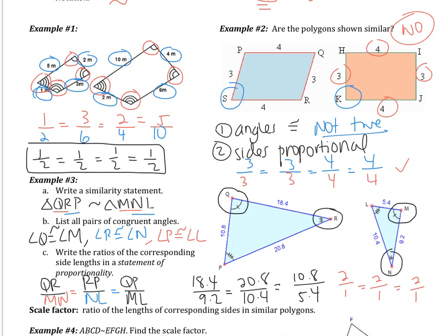So these triangles are similar for two reasons. One, all of their angles are congruent. And two, all of the sides are proportional — all of the sides have the same scale factor or ratio. What I did is I took the first triangle and divided all the sides by 2 to get the second triangle. I shrunk it to get the second triangle. That's why the triangles are similar.